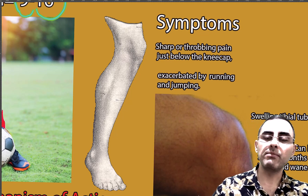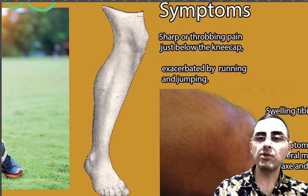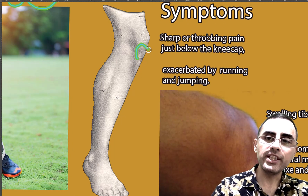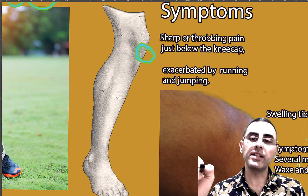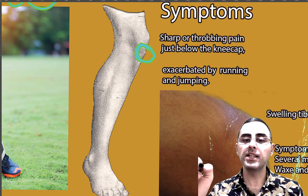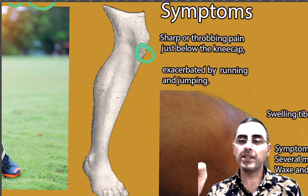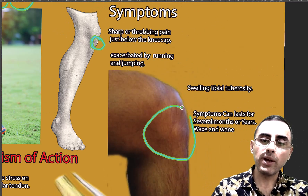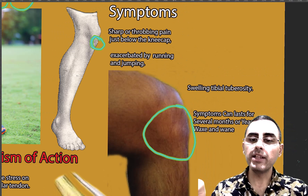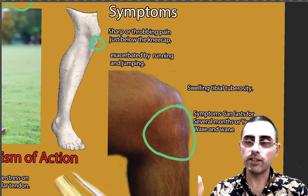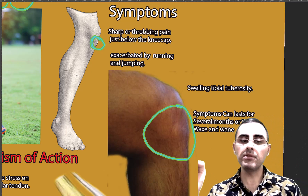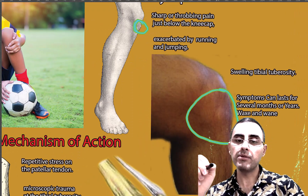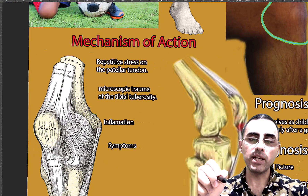What are the symptoms? The symptom is sharp and throbbing pain just below the kneecap. This pain is exacerbated by running, jumping, or other physical activity. Sometimes children notice swelling or a lump here. This swelling is caused by inflammation and is sometimes visible, or there is tenderness when you touch it during palpation.